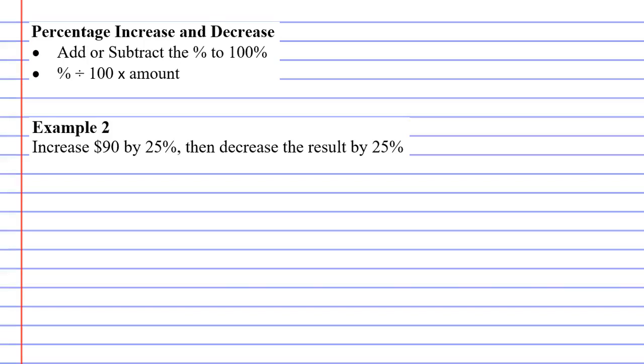All right, we're on to example two now, and this one says, increase $90 by 25%, then decrease the result by 25%.